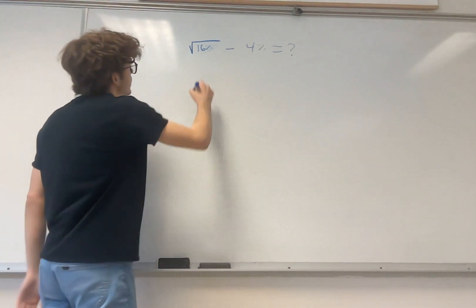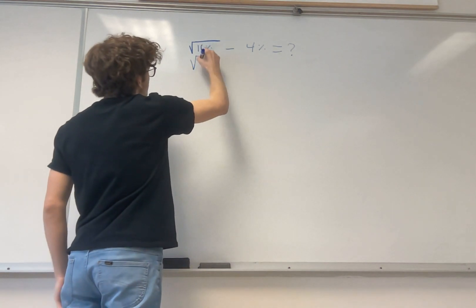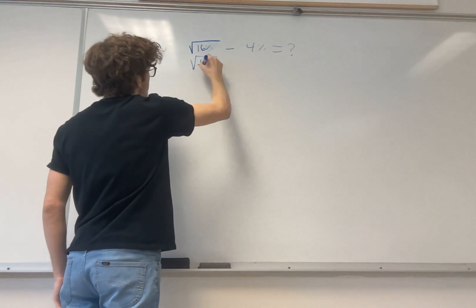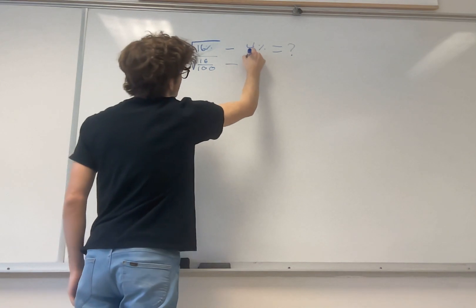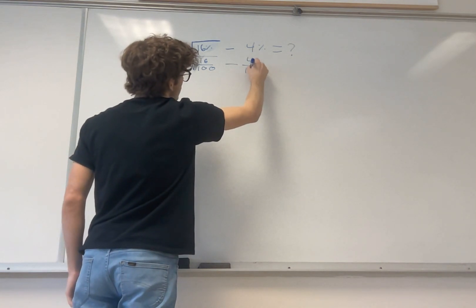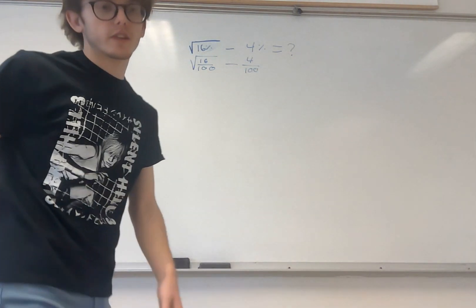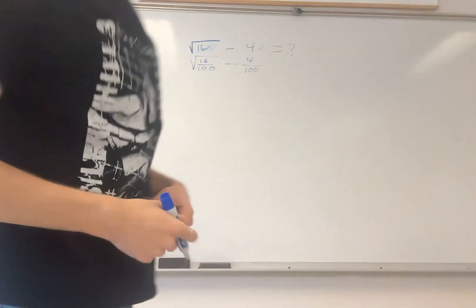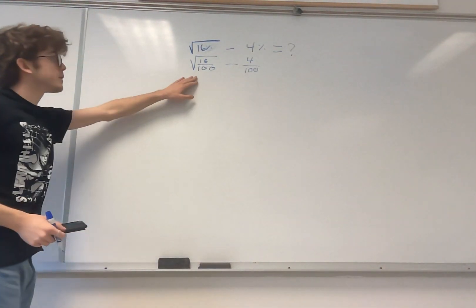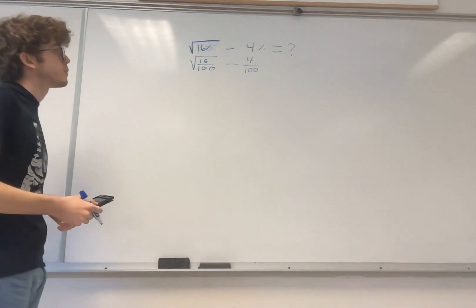All right, so I'll rewrite this as the square root of 16 over 100 minus 4 over 100. Let me grab my calculator because it might get a little tricky here.